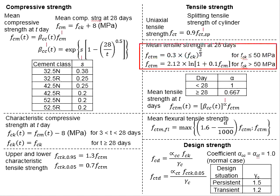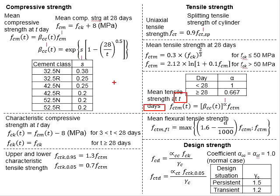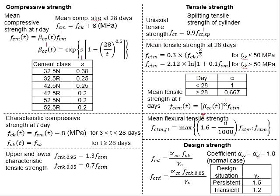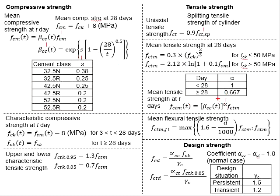These two equations are for determining FCTM at day 28. For a day other than 28, the FCTM_T can be obtained by multiplying a factor with FCTM. This factor is dependent on the type of cement and the value of alpha. If T is less than 28 days, alpha equals 1; if T is equal to or more than 28 days, alpha equals 0.667.